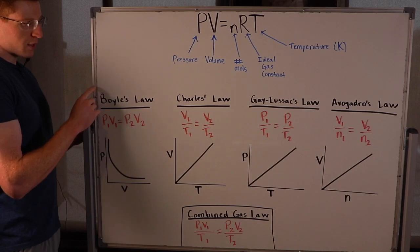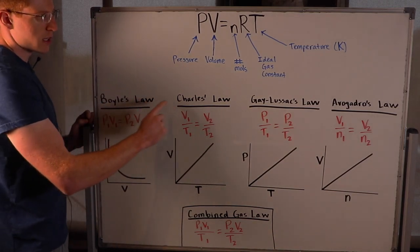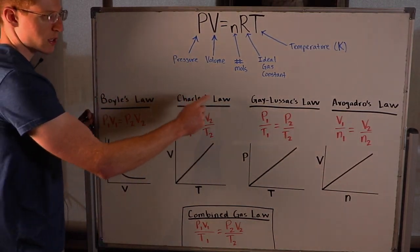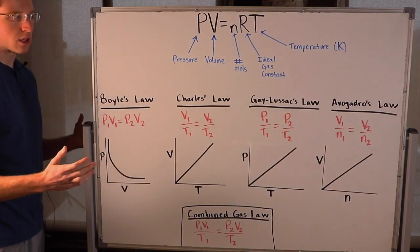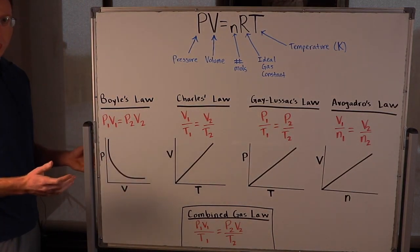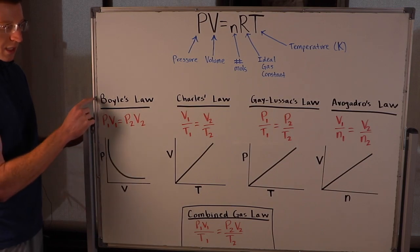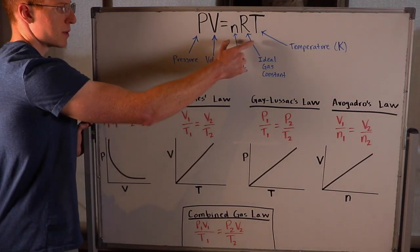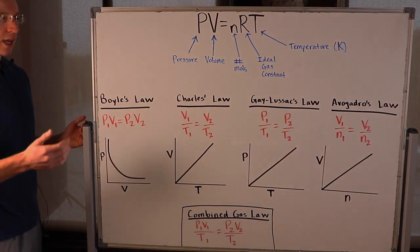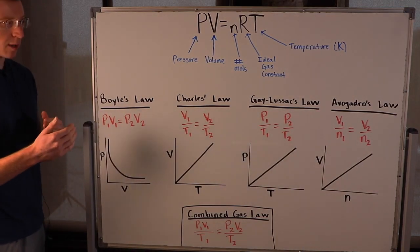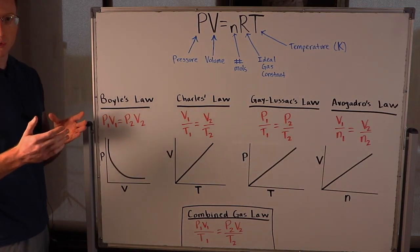You can derive a number of laws from PV equals nRT: Boyle's law, Charles's law, Gay-Lussac's law, and Avogadro's law. These are pretty useful for solving a lot of word problems in chemistry. Each one basically looks at two variables from PV equals nRT and assumes everything else is held constant, then sees how those two variables change with one another.